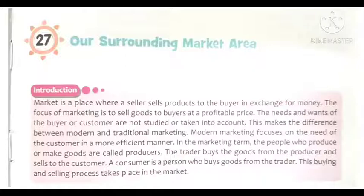In marketing terms, the people who produce goods — who make and manufacture items — are called producers (utpadak). After production, there are traders (vyaapari). Traders buy the goods from the producer.